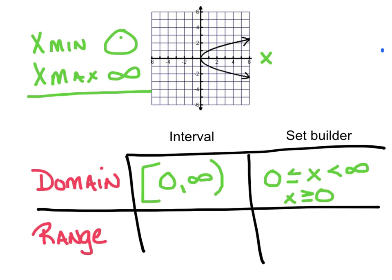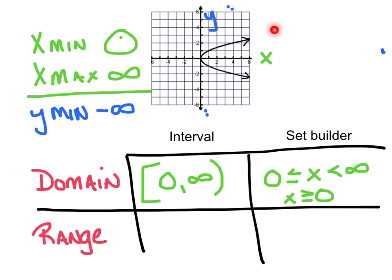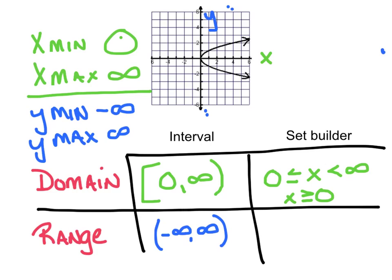Let's talk range. Looking at y values — minimum to maximum. The graph keeps going down forever, so I don't have a min — that's negative infinity. And looking at the max, it keeps going up forever — positive infinity. So the range in interval notation is negative infinity to positive infinity, and those always get parentheses: (-∞, +∞). In set builder notation, that's all real numbers.